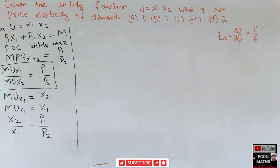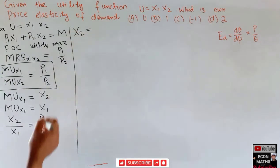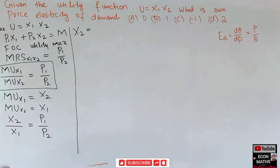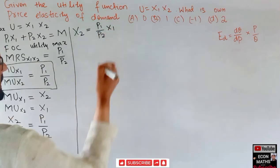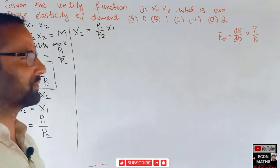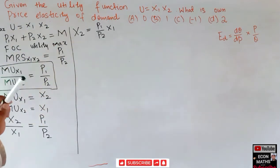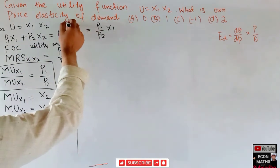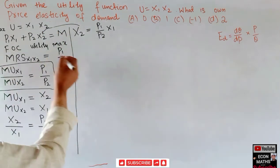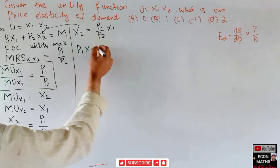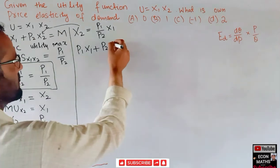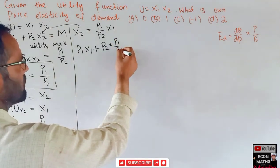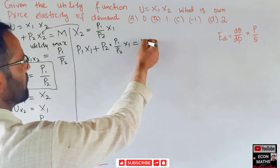Solving for x2: x2 is equal to p1 divided by p2 times x1. After that, we plug this value of x2 into our budget constraint. So we have p1*x1 plus p2 times (p1/p2)*x1 equals m.